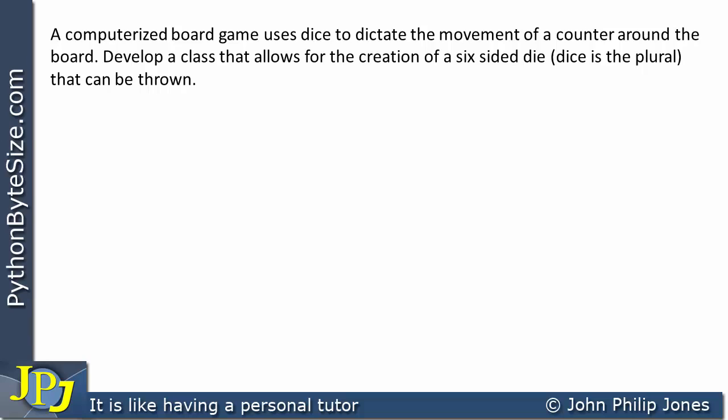Just as an aside — when you talk about an individual die, you use the word 'die'. When you talk about more than one die, you use the word 'dice', and dice is the plural. Often you will see people refer to one die as 'a dice', when in fact it isn't. When you say dice, it means more than one.